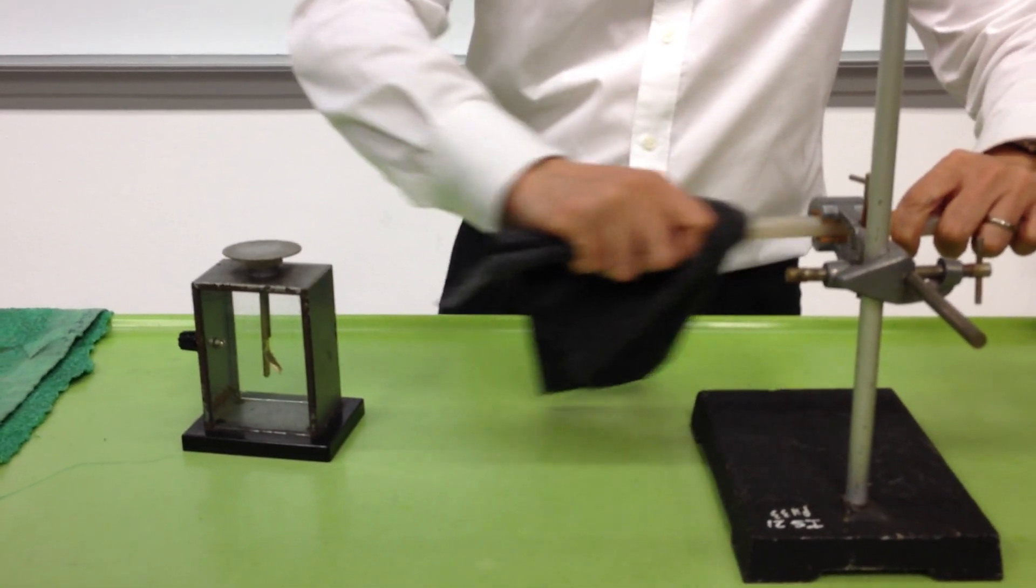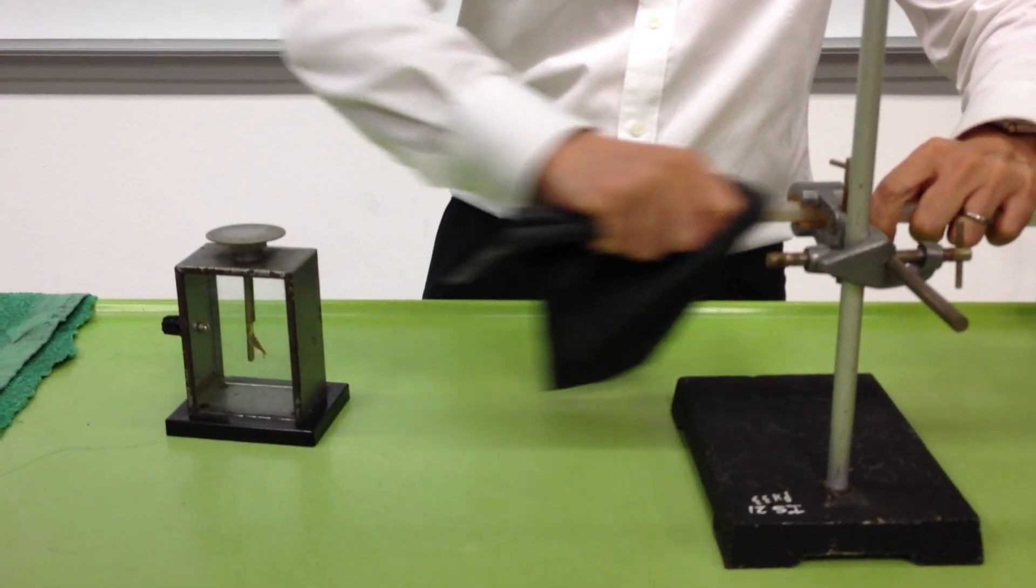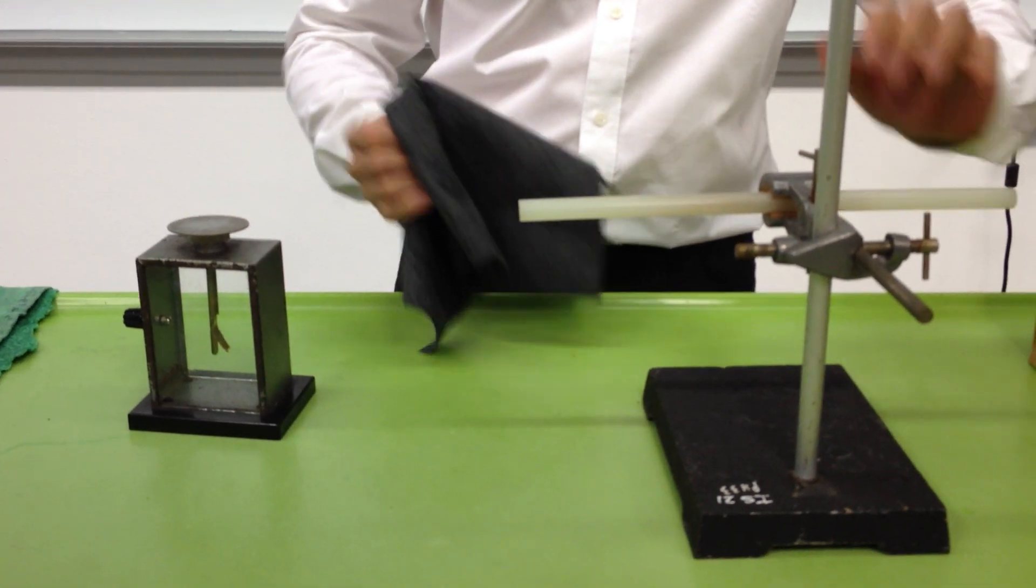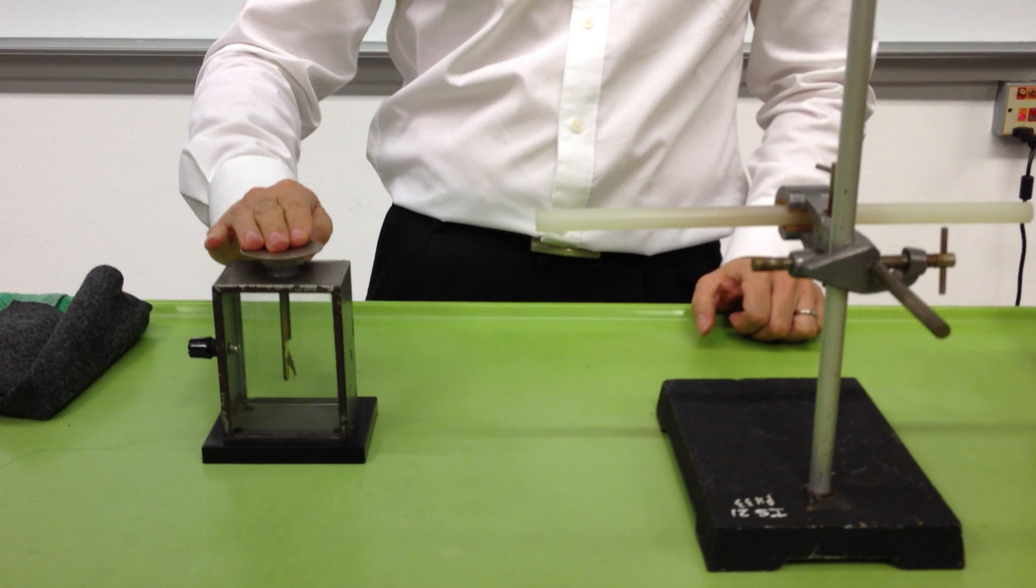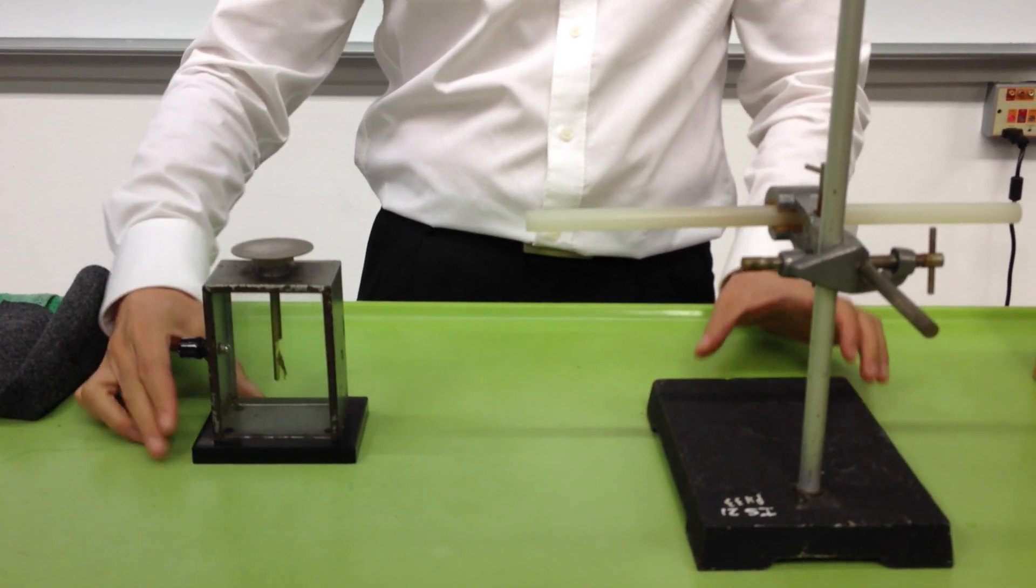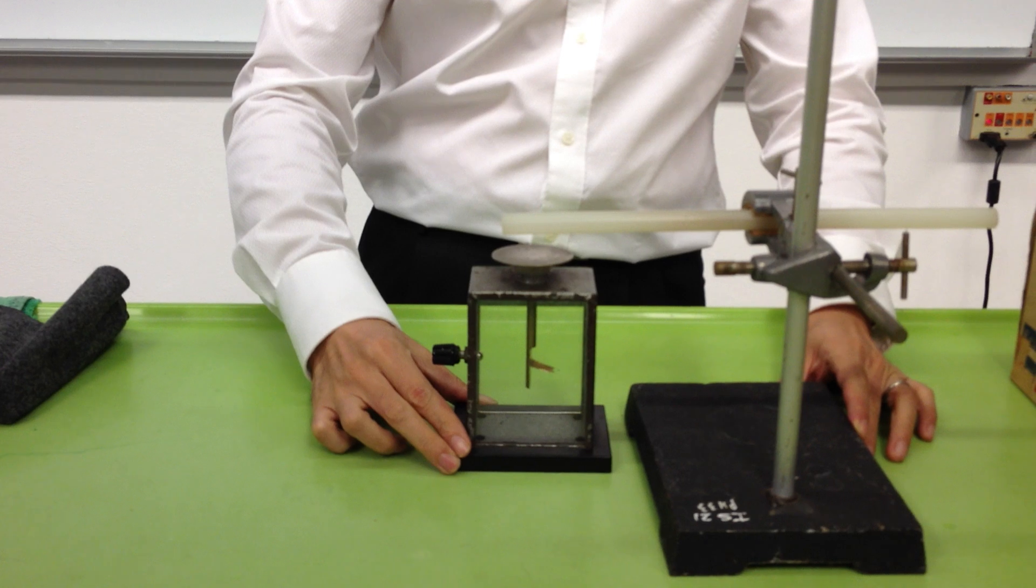First, we charge up the plastic rod. The gold leaf electroscope is discharged. You can see the deflection.